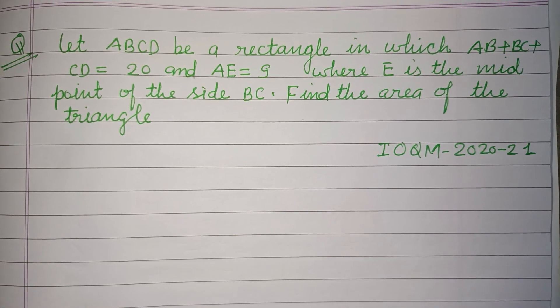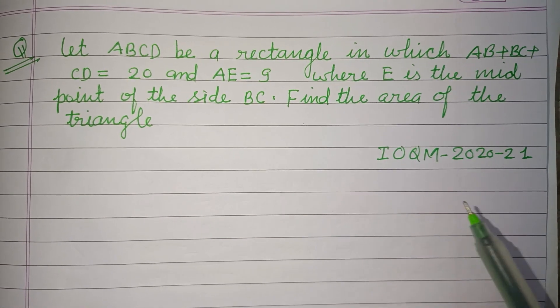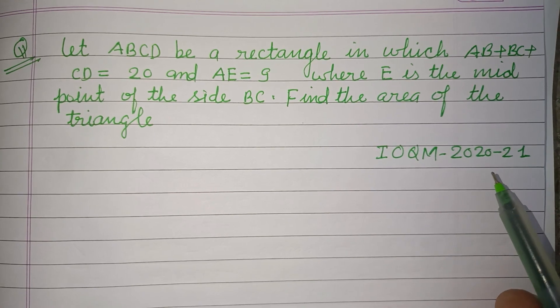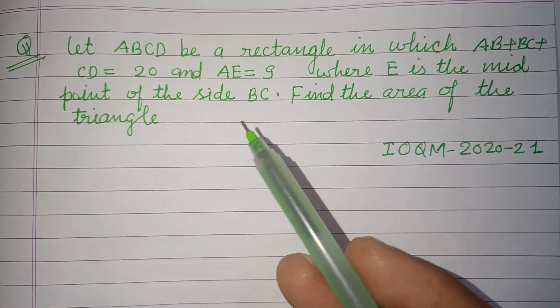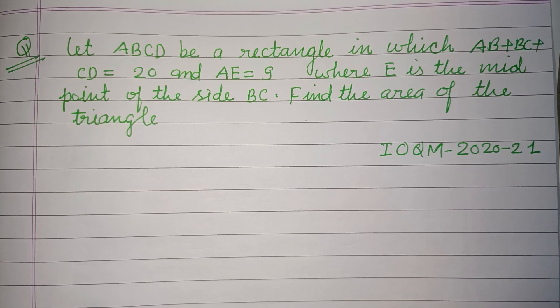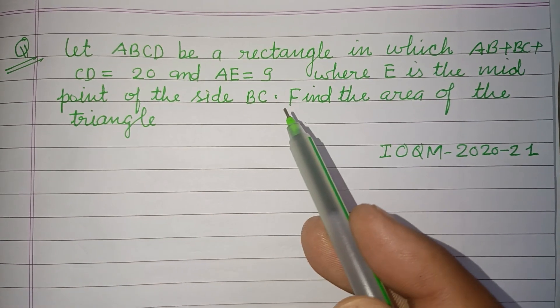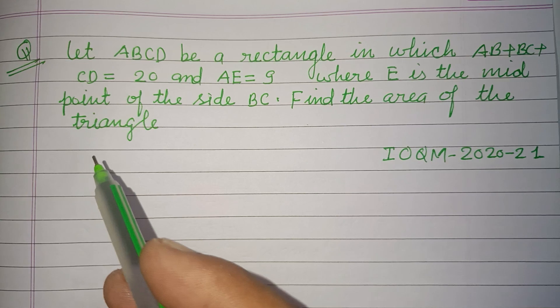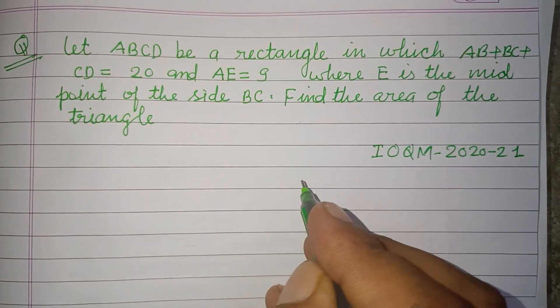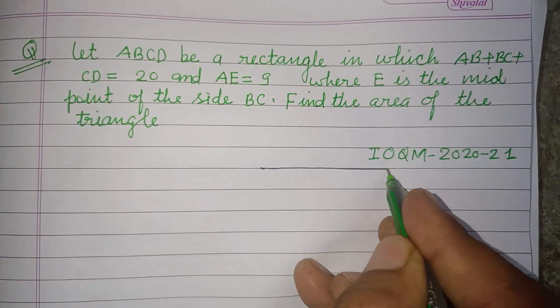Hello viewers, warm welcome to this YouTube channel. This is a question from IOQM 2020-21. Let ABCD be a rectangle in which AB+BC+CD equals 20 and AE=9. Here E is the midpoint of the side BC. So first we draw a rectangle.